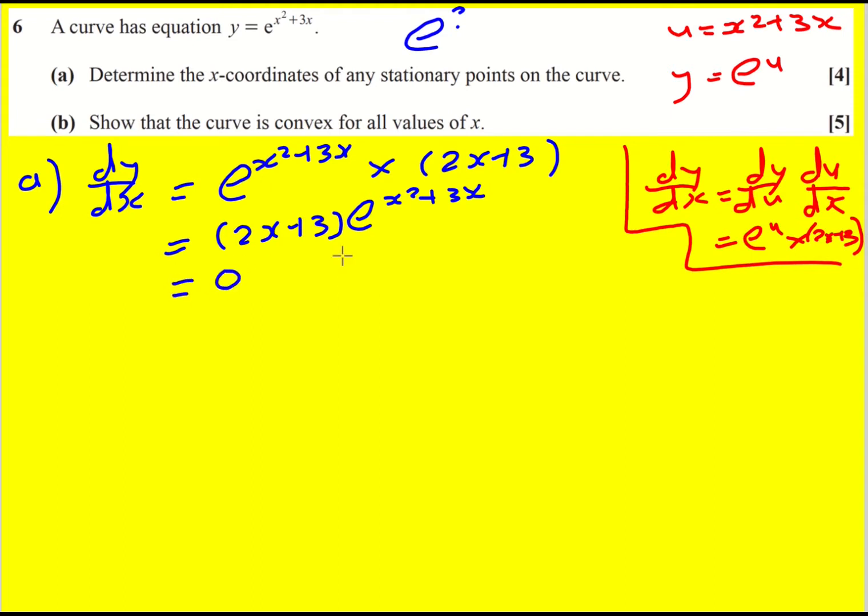That's the main part. This equals 0 for stationary points. However, e to the x squared plus 3x is never 0, it's always greater than 0. So although it said stationary points, there's only one in this case. 2x plus 3 equals 0, which means x is minus 3 over 2.